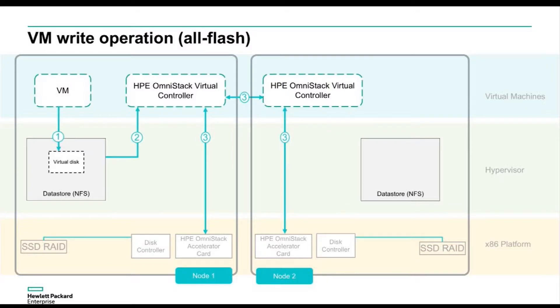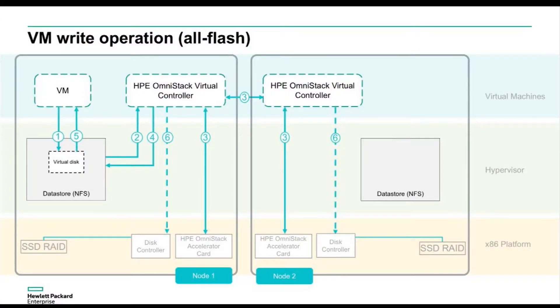Both virtual controllers pass the data to the accelerator card, where dedupe and compression happen. Once that's complete, it acknowledges back to the virtual machine and the VM moves on to the next block. The accelerator card also optimizes the write — lining up all the blocks into a single stripe write for the RAID set, so only unique data is written down with only one parity calculation. This is also important for the SSDs because it produces a large block write rather than wearing the SSD out with lots of small writes, reducing I/O and improving both performance and SSD durability.